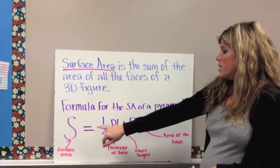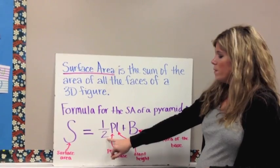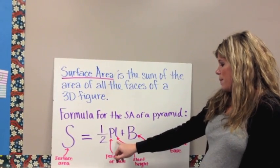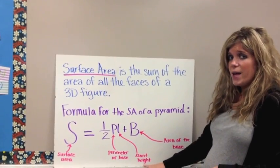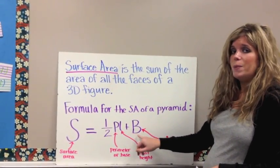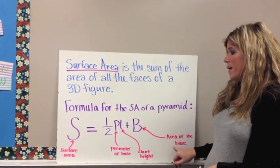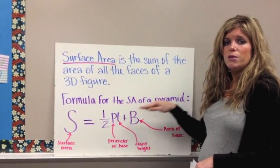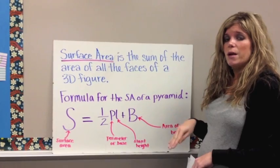is going to be surface area equals 1 half times P, which is the perimeter of the base, times L, which is the slant height, plus capital B, which is the area of the base. So these are very important things in your formula that you're going to need to remember, so go ahead and take a minute to jot those down in your Cornell notes.